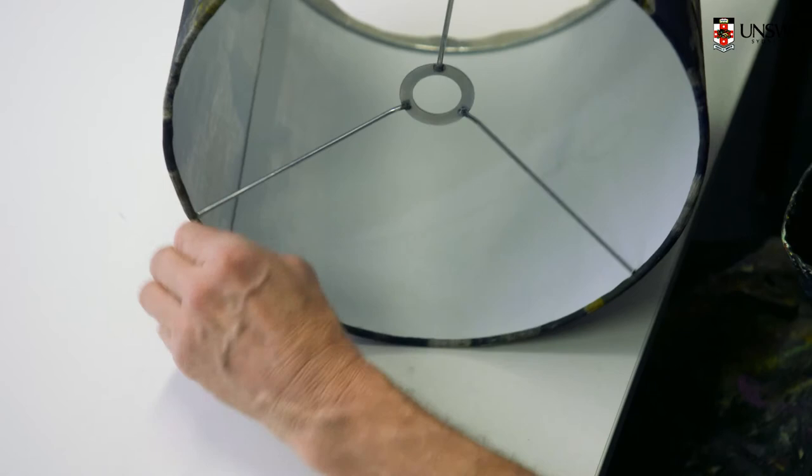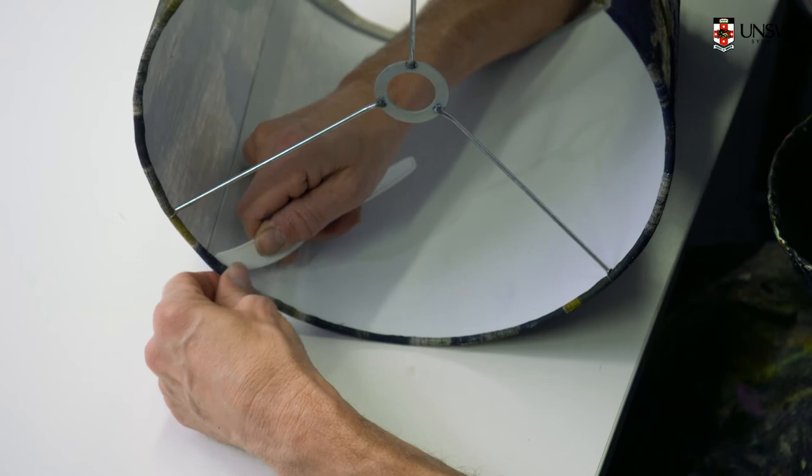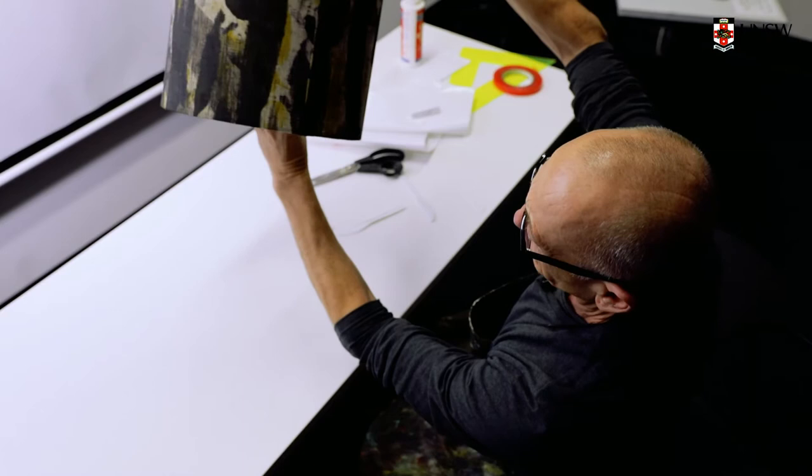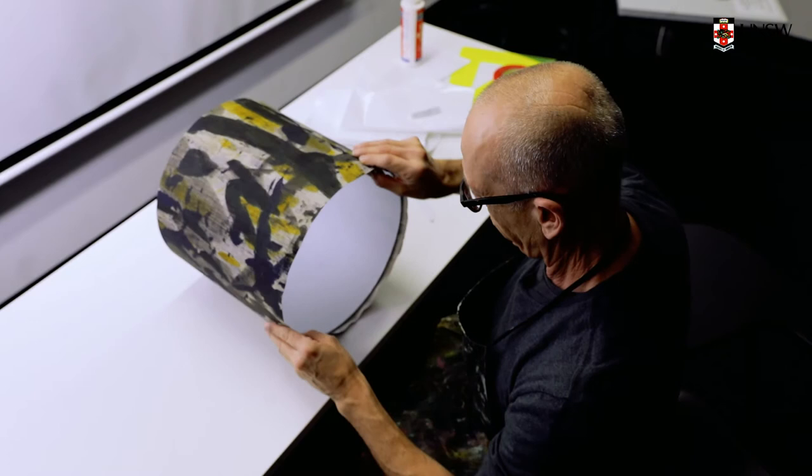And that's the bottom of the lampshade finished. Trim those little errant threads off later. There we are, finished. Just leave that to dry now, and then we do the top.